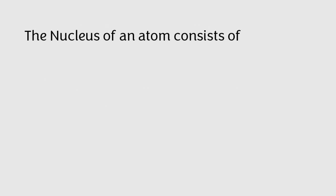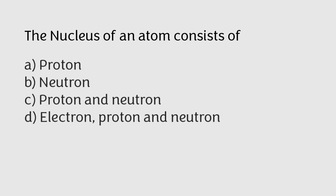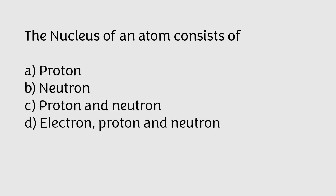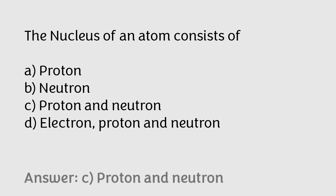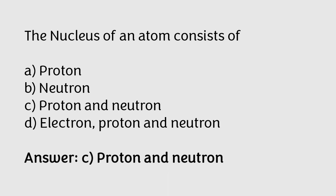The nucleus of an atom consists of: proton, neutron, proton and neutron, or electron proton and neutron? The correct answer is option C — the nucleus of an atom consists of protons and neutrons.